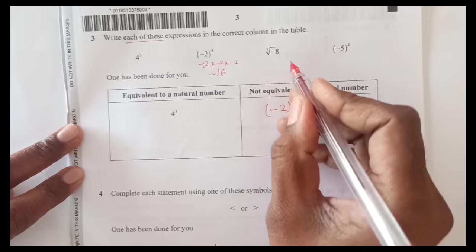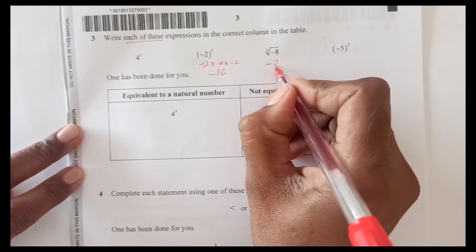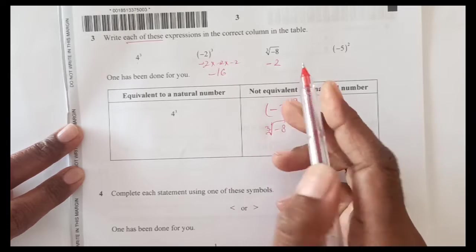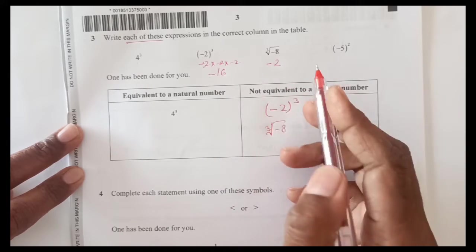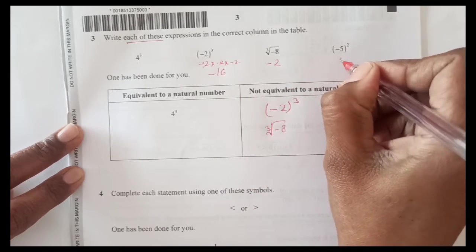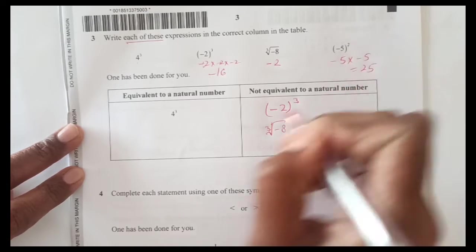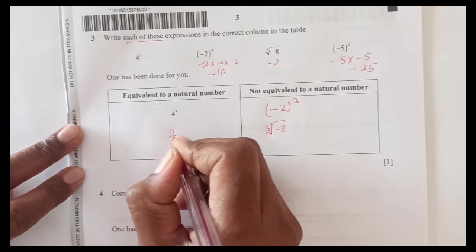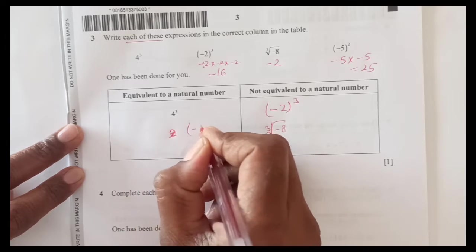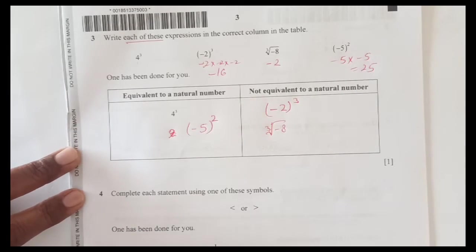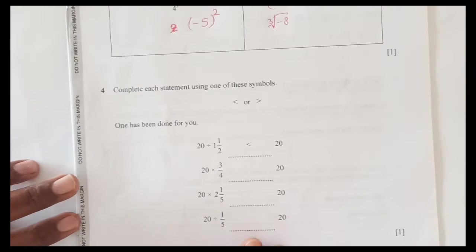Then cube root of negative 8 is negative 2. This is also going to be here. Remember that you are going to write down the original one, not the calculation. This one here is negative 5 squared: negative 5 times negative 5 is 25. Sorry, the original number, negative 5 squared, whatever you had.